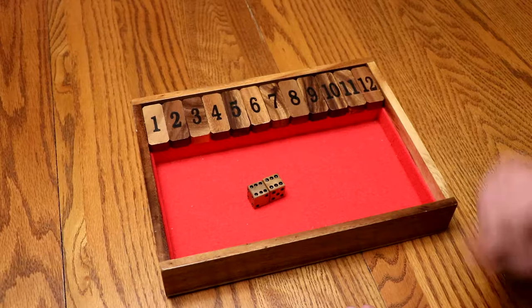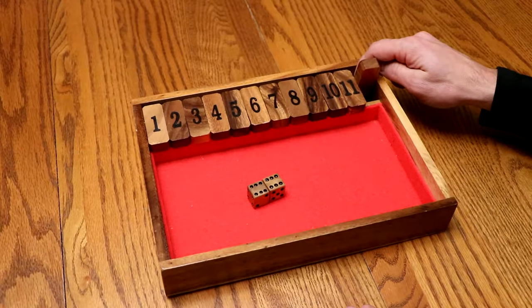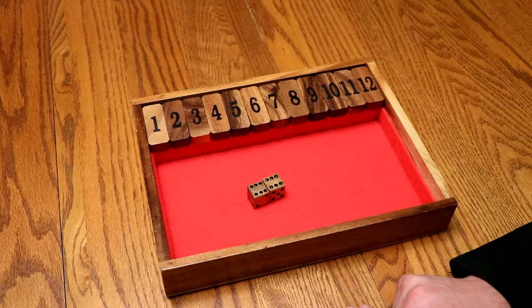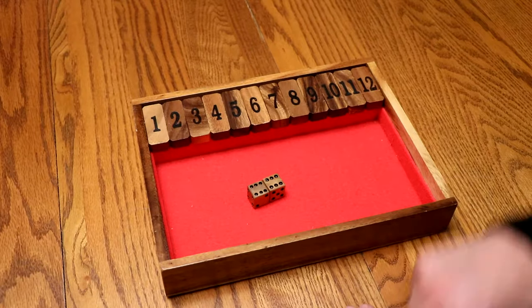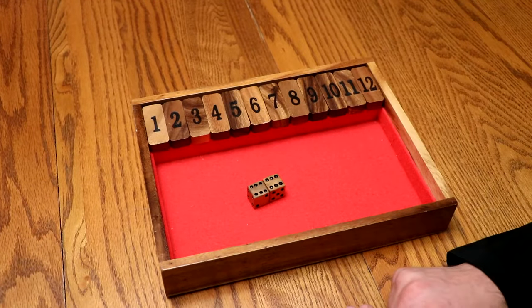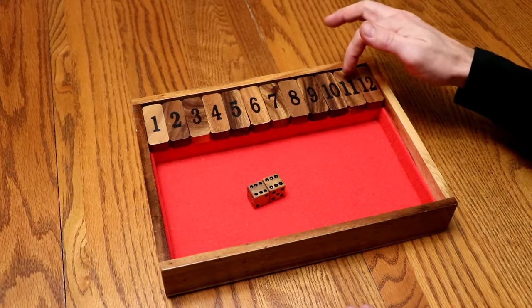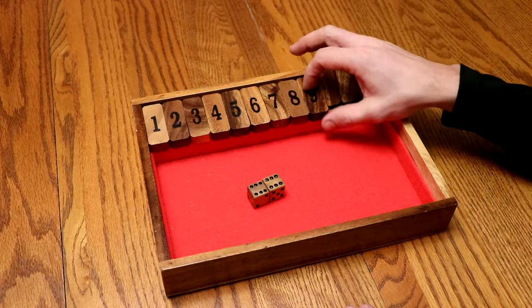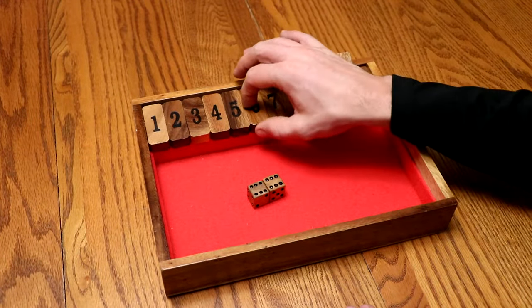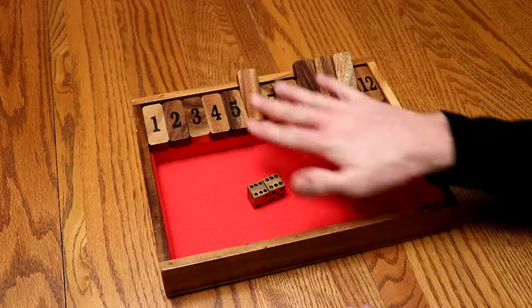If I roll a six and a six, that's a great roll. If I add, I can take 12 off the board. If I multiply, six times six is 36. I could take any combination of numbers that add up to 36. For example, 11, 10, 9—that makes 30—and then I can take six off.